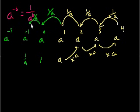Every time we decrease the exponent, we're dividing by a. So to go from a to the minus 1 to a to the minus 2, let's just divide by a again. And what do we get? If you take 1 over a and divide by a, you get 1 over a squared.